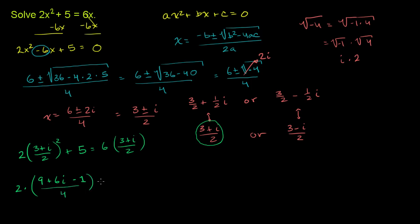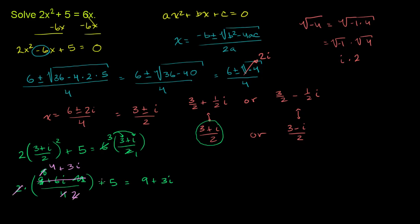All of that over 4, plus 5. The 9 minus 1 simplifies to 8, so we have 8 plus 6i over 4 plus 5. Dividing numerator and denominator by 2 gives 4 plus 3i over 2, and the 2s cancel. So the left-hand side becomes 4 plus 3i plus 5, which needs to equal 9 plus 3i. We have 3i on both sides, and 4 plus 5 equals 9 — so the root 3 plus i over 2 is verified.